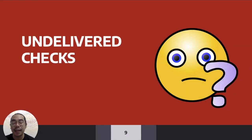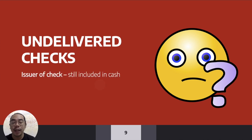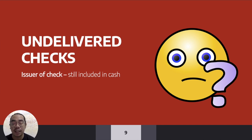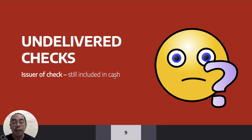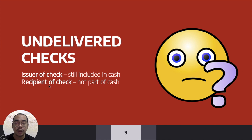What if it is an undelivered check? You issued and wrote the check but have not yet delivered it to the recipient. If you are the issuer, it is still included in cash because the recipient cannot encash it since it was not delivered. Like the post-dated check, the rule is: if it is not readily available for encashment, then it is not yet cash. If you are the recipient, since you have not received it, it is not part of cash.